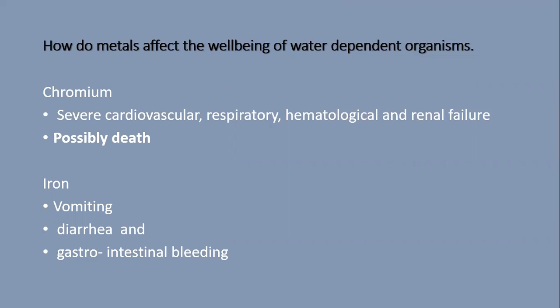Let's consider chromium, for example. Extremely high exposure to chromium may result in severe cardiovascular, respiratory, hematological, and renal failure, and possibly cancer. For iron, it would take just six hours after exposure to start vomiting, having diarrhea, and gastrointestinal bleeding — that is in cases whereby there is iron overdose.